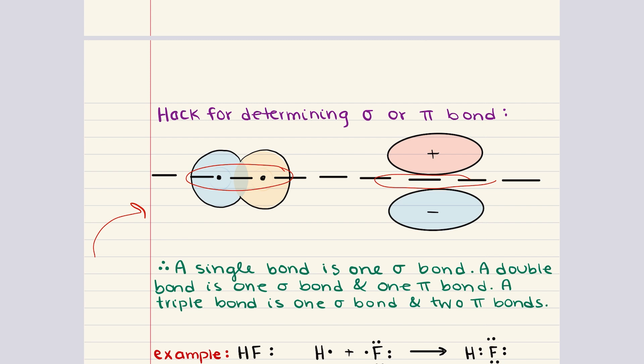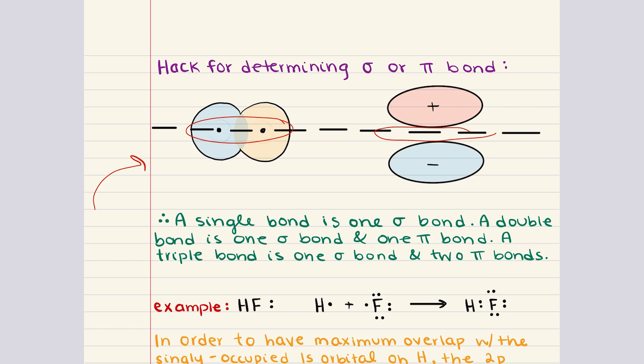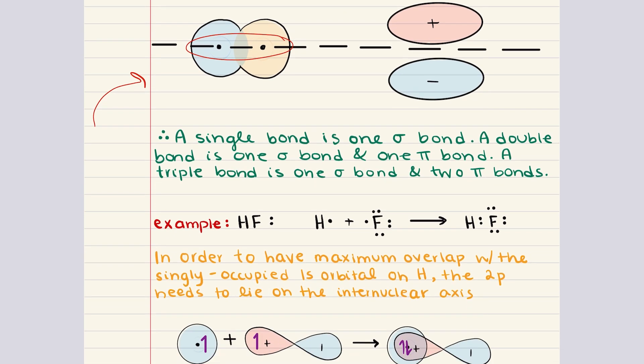This understanding of orbitals and bonding allows us to refine our knowledge of bond types. A single bond is a sigma bond. A double bond consists of one sigma bond and one pi bond. A triple bond consists of one sigma bond and two pi bonds.